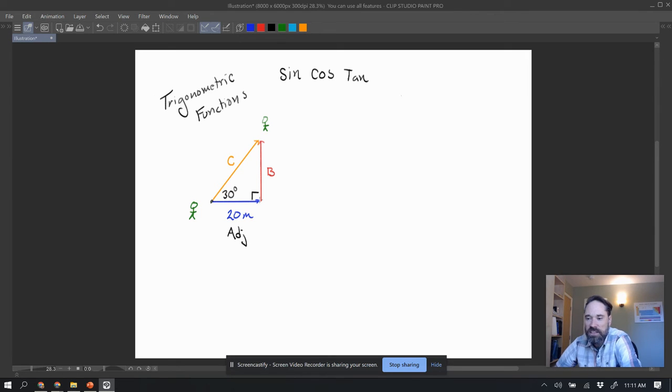So my adjacent side length is the blue one, because this is where my angle, and the long side is always my hypotenuse, HYP. That means that this red side that's left over is my opposite, and I've got these pieces.